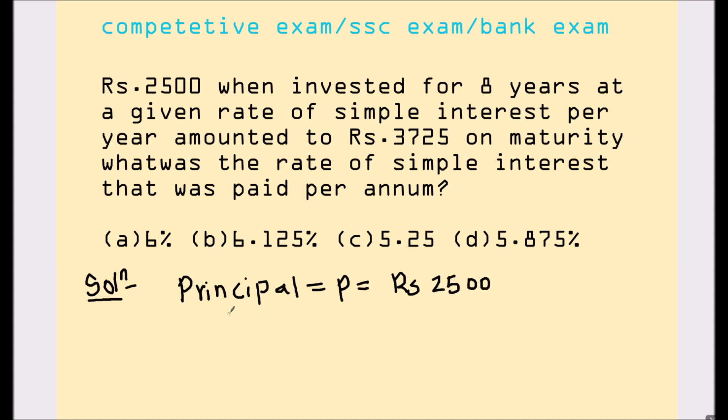Next, we have been given amount, which is A equals rupees 3725. Also, we have been given time, which is for 8 years, which is T equals 8 years.